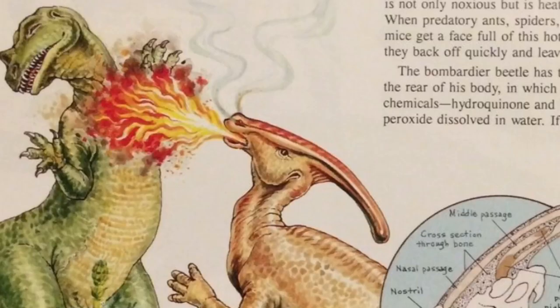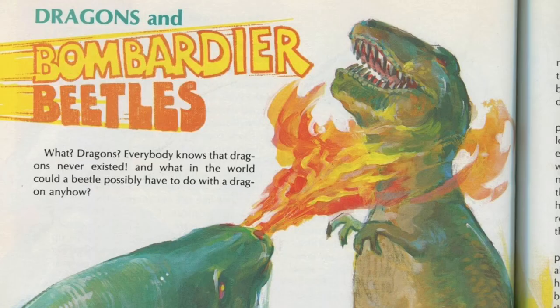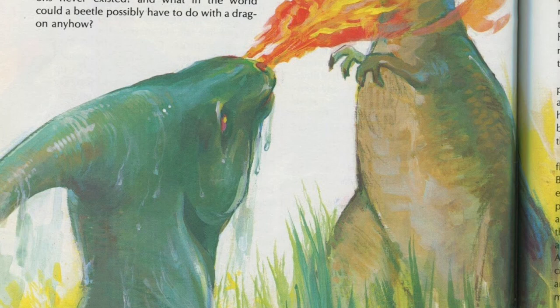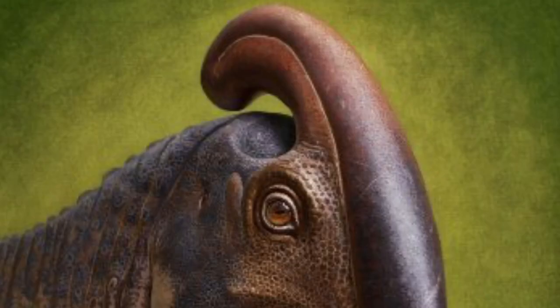Fire-Breathing Parasaurolophus. This is a myth theorized by young-Earth creationist Wayne Gish in his books Dinosaurs by Design and Dinosaurs, Those Terrible Lizards, proposing that the hadrosaur Parasaurolophus would have breathed fire to deter predators. Despite having no evidence supporting it and being repeatedly debunked, many people still share the theory. We should all know that hadrosaur crests were for amplifying their calls, and not for imitating dragons.